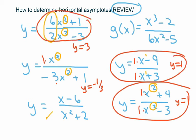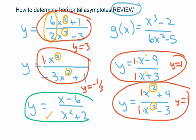The two we have left: this one where the degree in the numerator is smaller than the degree in the denominator. If it's smaller, it's automatically y equals 0. And if the degree in the numerator is larger than the degree in the denominator, there is no horizontal asymptote.